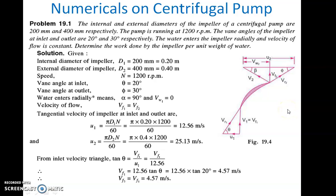Now let us see the first numerical. The internal and external diameters of the impeller of a centrifugal pump are 200 mm and 400 mm respectively. The pump is running at 1200 RPM. The vane angles of the impeller at inlet and outlet are 20 degrees and 30 degrees respectively — these are theta and phi, the runner vane angles or relative velocity angles. The water enters the impeller radially, meaning alpha is 90 degrees, Vw1 is zero, and the velocity of flow is constant so Vf1 equals Vf2. Determine the work done by the impeller per unit weight of water.